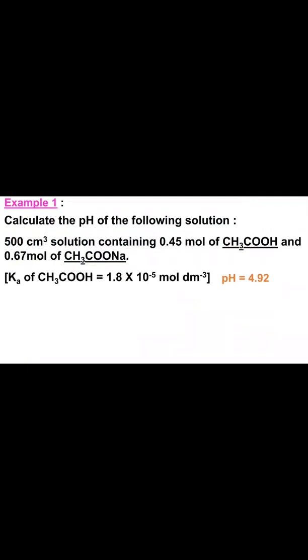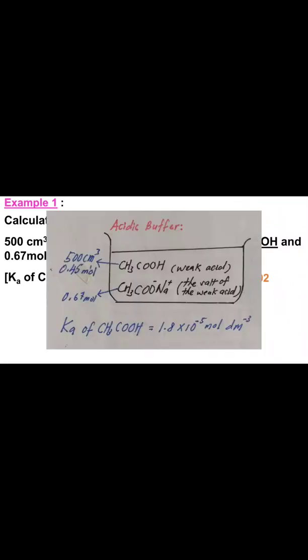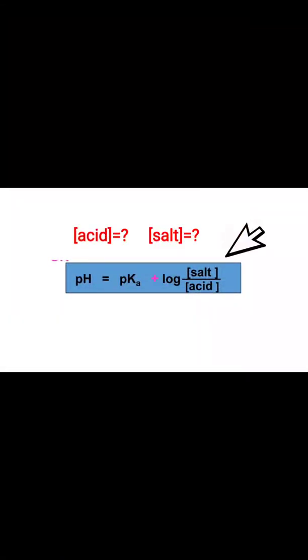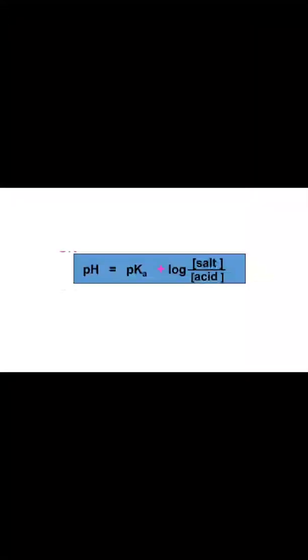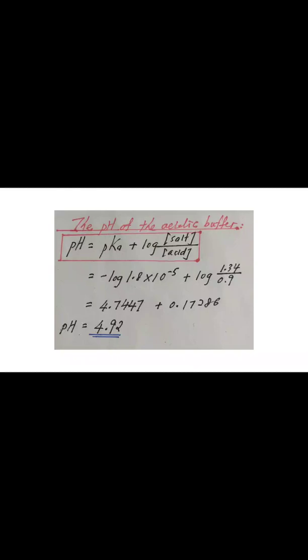Let's go back to example 1 and see how to use the formula. To avoid confusion, I've put all the information given by the question together. From the formula, we need to determine the concentration of the weak acid and the concentration of the salt of the weak acid. Using the formula: moles = mV ÷ 1000, we can determine the concentration of the weak acid is 0.9, while the concentration of the salt is 1.34 mol/L. Using the acidic buffer formula, the pH of the acidic buffer is equal to 4.92.